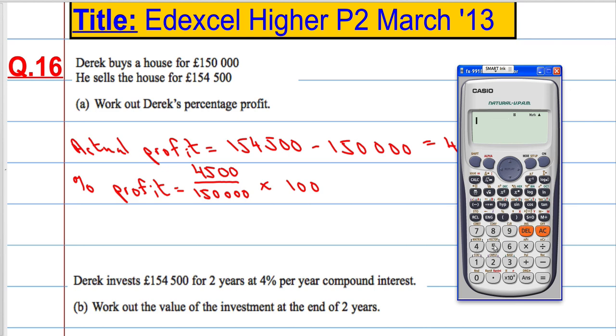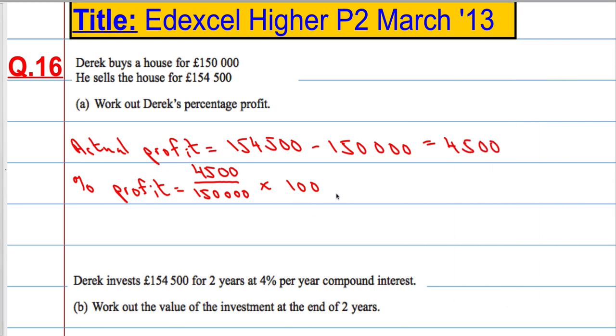Right, so we have 4,500 over 150,000. So that's what it is as a decimal. Multiply it by 100, let's turn it into a percentage. He's made 3% profit.